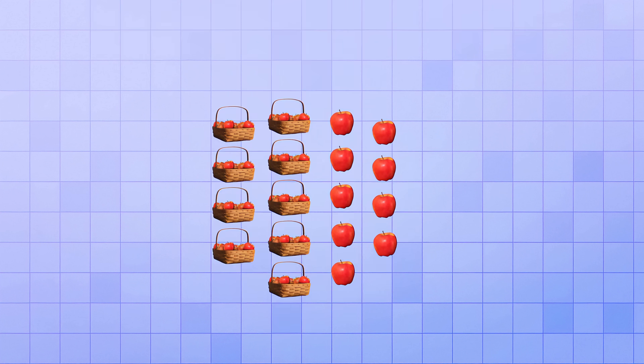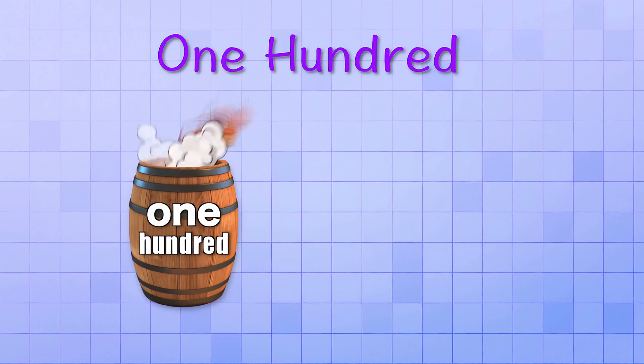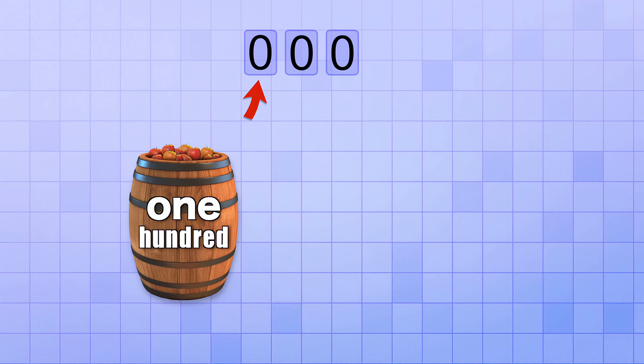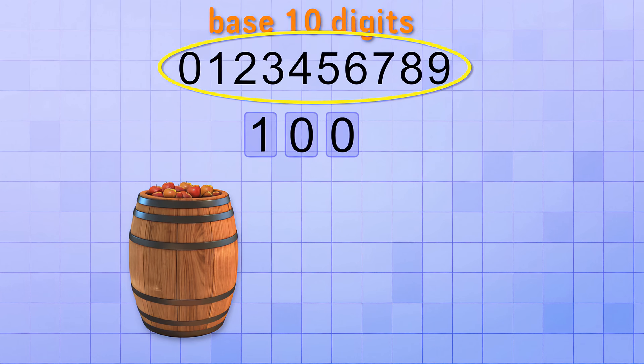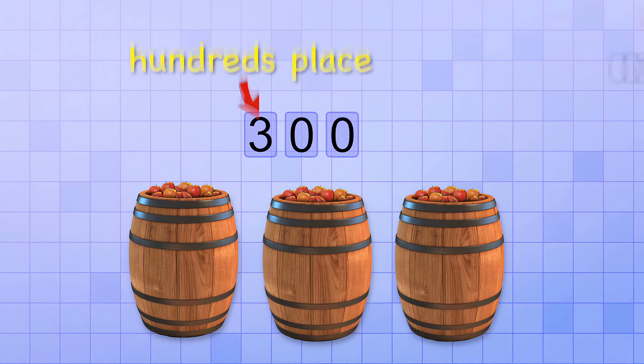If we've picked 99 apples, and then we've picked just one more, we'll have exactly 100 apples. And if we make a group from those 100 apples, we can use this new number place to count how many groups of 100 we've picked. That means that we can reuse the same 10 digits again in this new number place to count how many groups of 100 we have. And you guessed it, it's called the hundreds place, because we use it to count groups of 100.